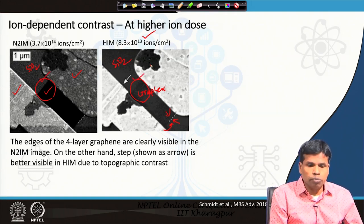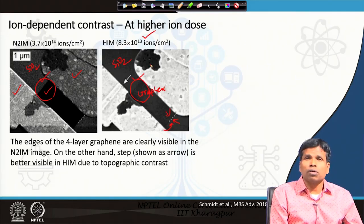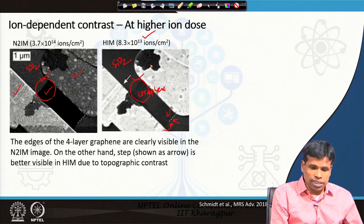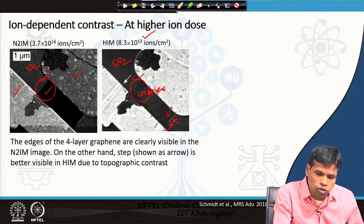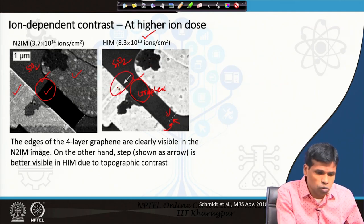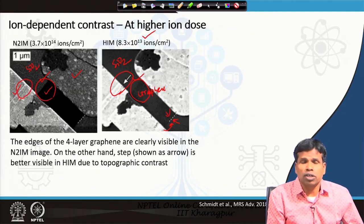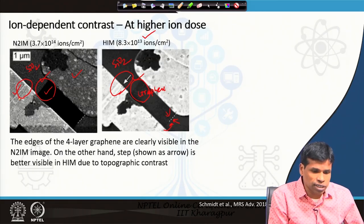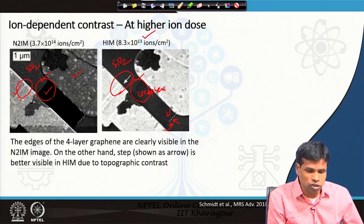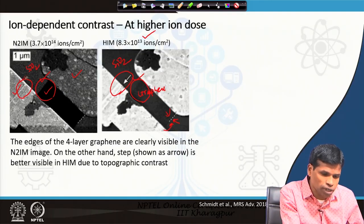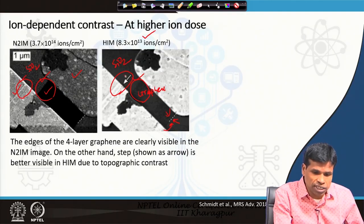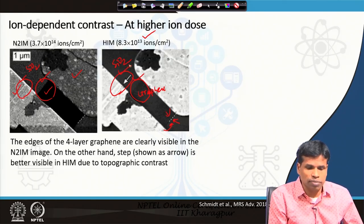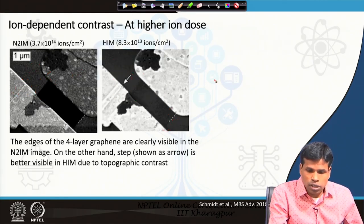This indicates the importance of varying different ions in ion microscopy. Helium, being smaller in size, provides higher resolution and can distinguish steps that are not as clear in the nitrogen ion microscope, because nitrogen is larger and therefore has lower resolution. So topographic contrast is more significant in the helium ion microscope compared to the nitrogen ion microscope.